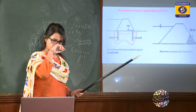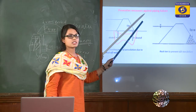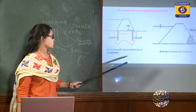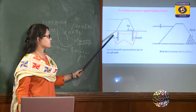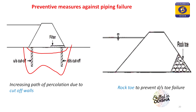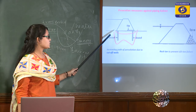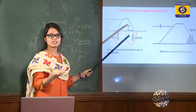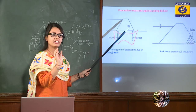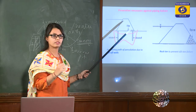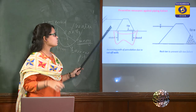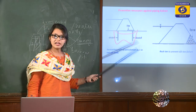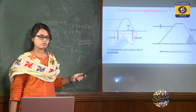Measures against piping failure include providing cut-off walls or sheet piles made of concrete. Cut-off walls increase the seepage path, which reduces the hydraulic gradient — since gradient equals head loss divided by length, increasing length decreases the gradient, thereby reducing seepage pressure and preventing piping failure. Providing rock toe also gives internal drainage to prevent piping.